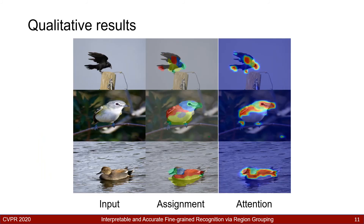We further visualize the part assignment and attention maps on CUB-200. Our model can find meaningful parts like heads, wings, and bellies for birds, and learns that certain parts such as beaks, legs, and wings are more important for recognition.